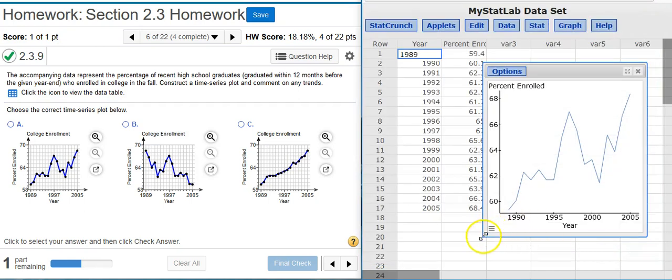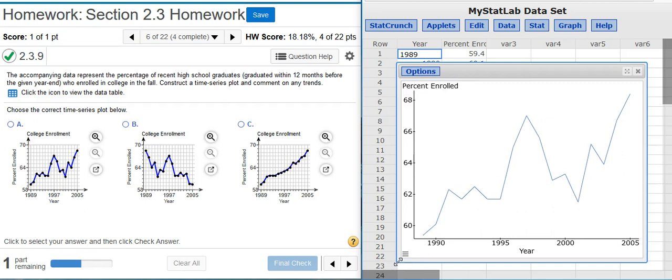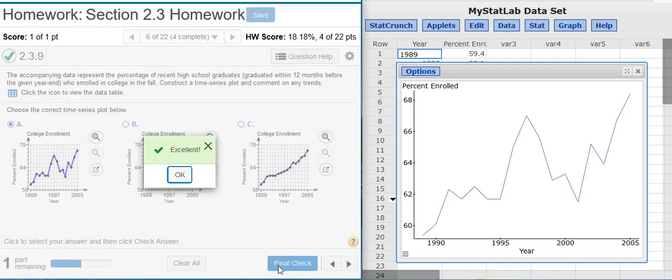And here is my time series graph. Now I just look for the answer option that best represents what I have here in StatCrunch. And clearly that's going to be answer option A. Excellent!